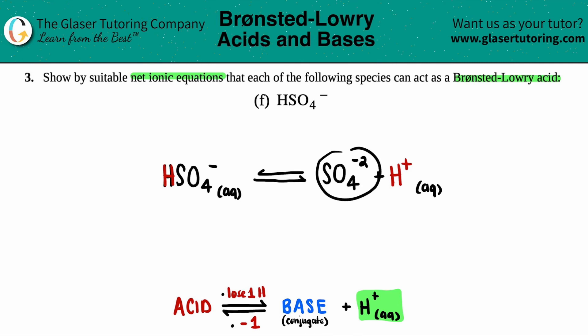And since this is the conjugate base, it's aqueous. And that's it. If you noticed, the acid and its base only differ by one hydrogen and that one charge. But that's all that it is, guys. All right? So this is your net ionic equation, HSO4 acting as an acid.